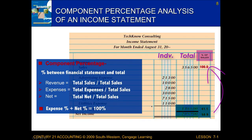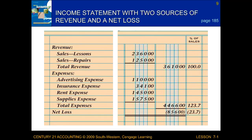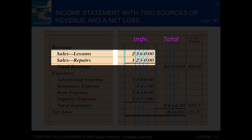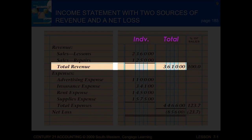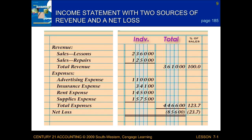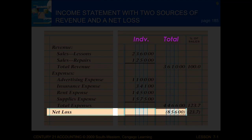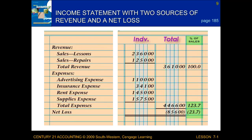That is what a full income statement looks like — we've got our heading, all our accounts and amounts, and the component percentage column filled out. Here is an income statement that has multiple sources of revenue and a net loss. Before we only dealt with one type of sales, but now there are two types, listed individually with a separate total revenue line dumped into the totals column. With a net loss, the total is placed in parentheses, and the component percentage would also be negative — for example, 123.7 minus 23.7 equals 100%.